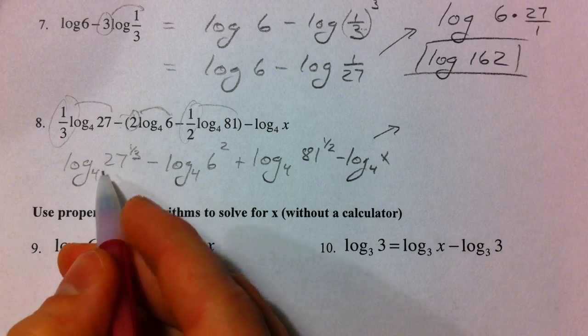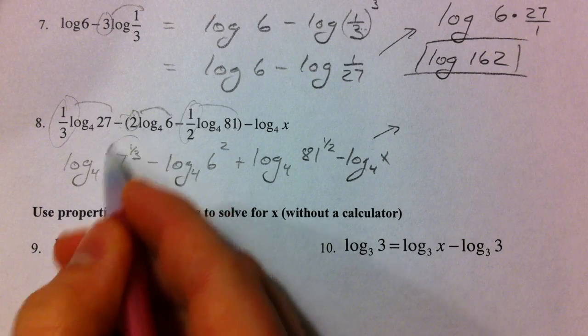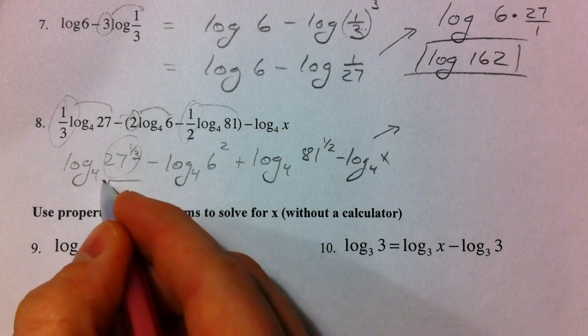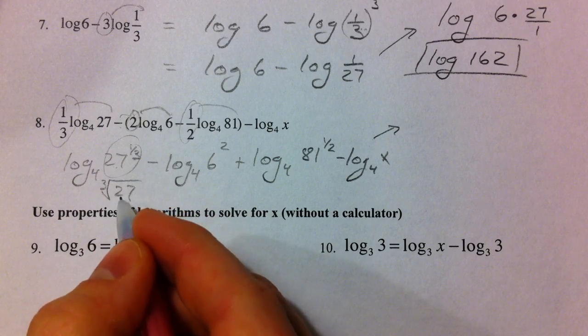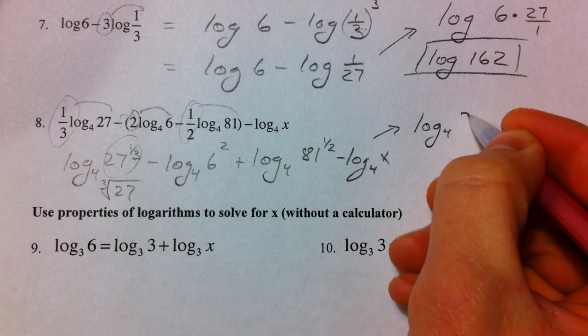So what we have to think of now, log base 4 of 27 to the 1/3, this is the cube root of 27. What times itself 3 times is 27, so that ends up being log base 4 of 3.